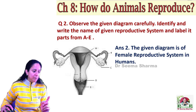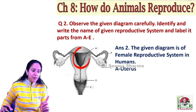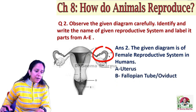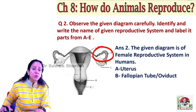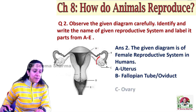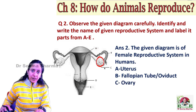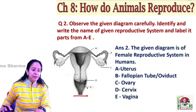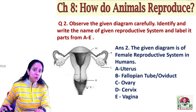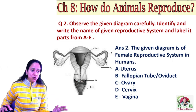Now coming to the labeling part. A part is uterus. B part is fallopian tube — another name for this is also given as ovary. C part is ovary. D part is cervix, and E part is vagina. So this is how you have to attempt a diagram-based question.